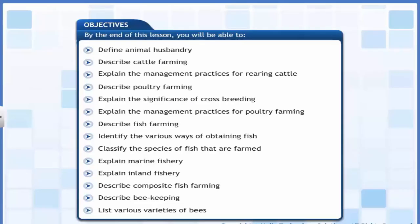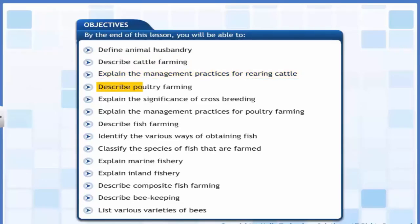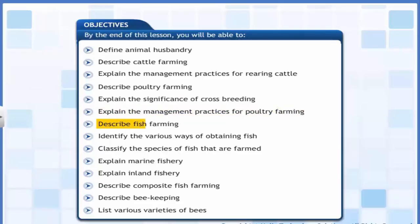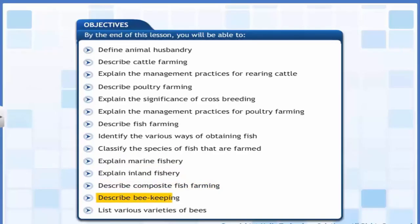By the end of this lesson, you will be able to define animal husbandry, describe cattle farming, explain the management practices for rearing cattle, describe poultry farming, explain the significance of crossbreeding, explain the management practices for poultry farming, describe fish farming, identify the species of fish that are farmed, explain marine and inland fishery, describe composite fish farming, describe beekeeping and list various varieties of bees.